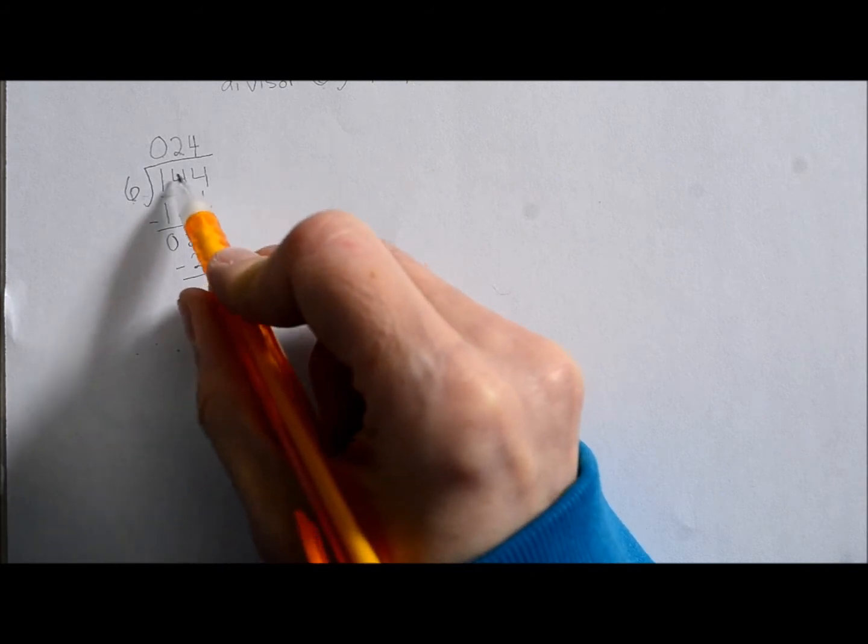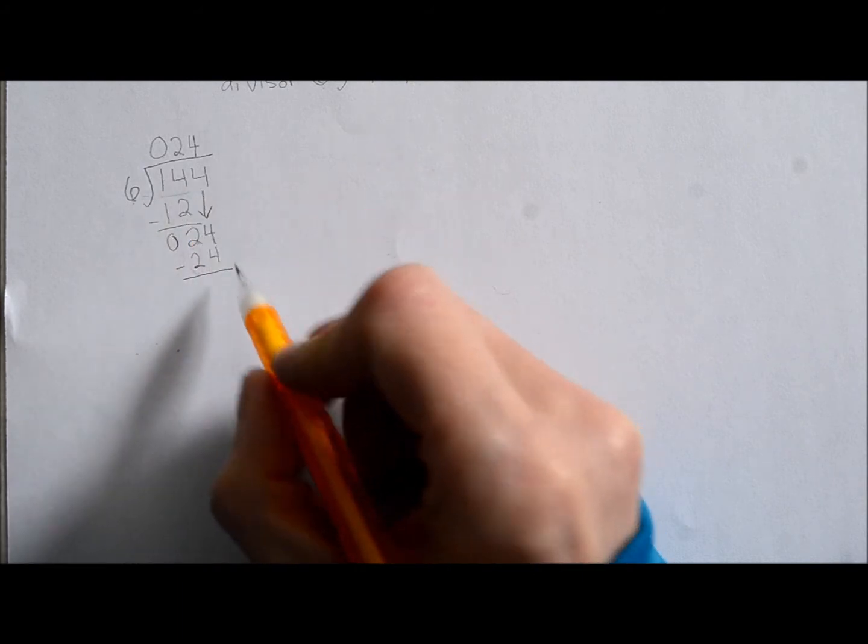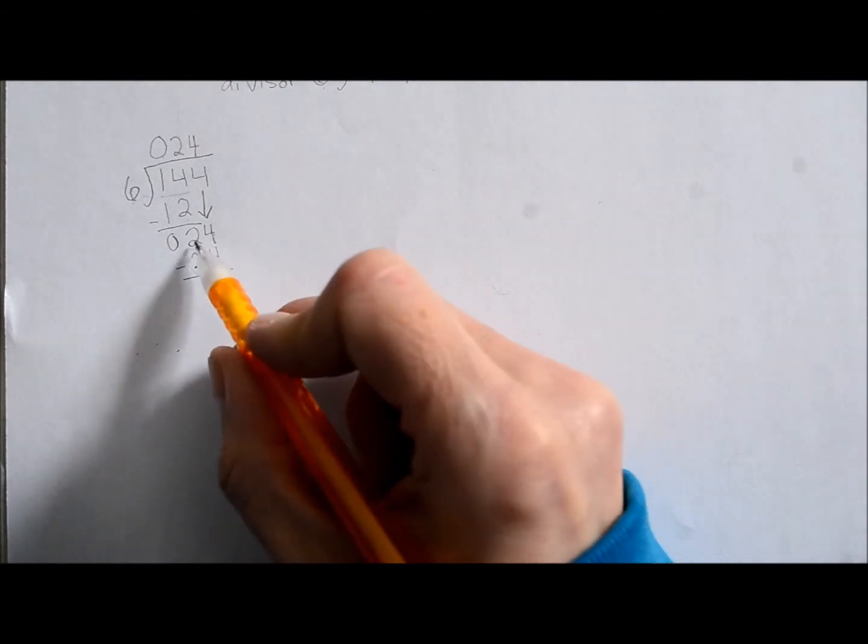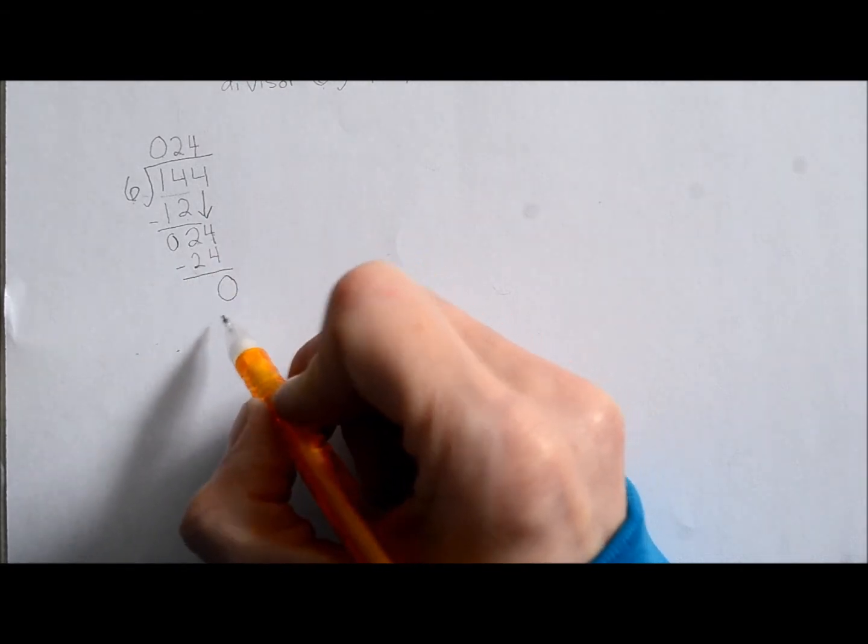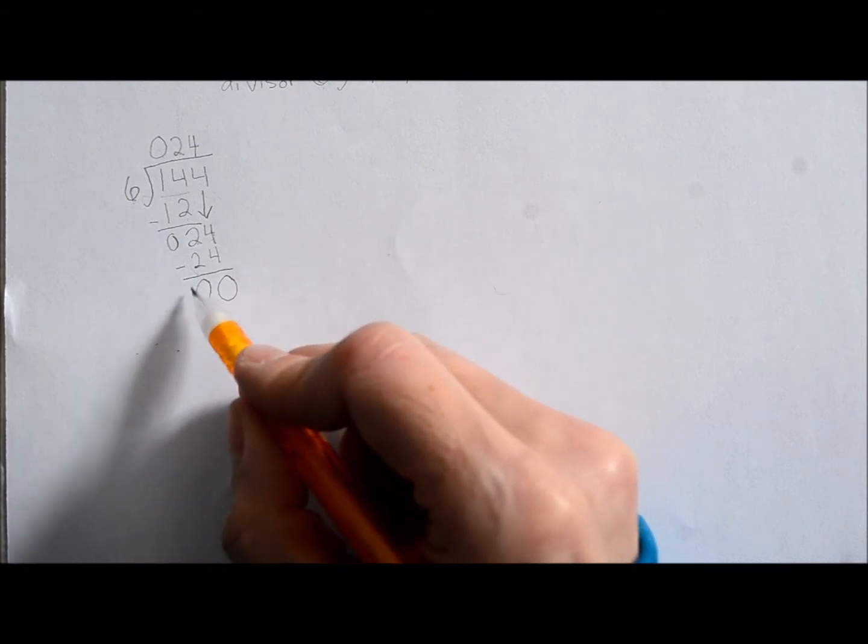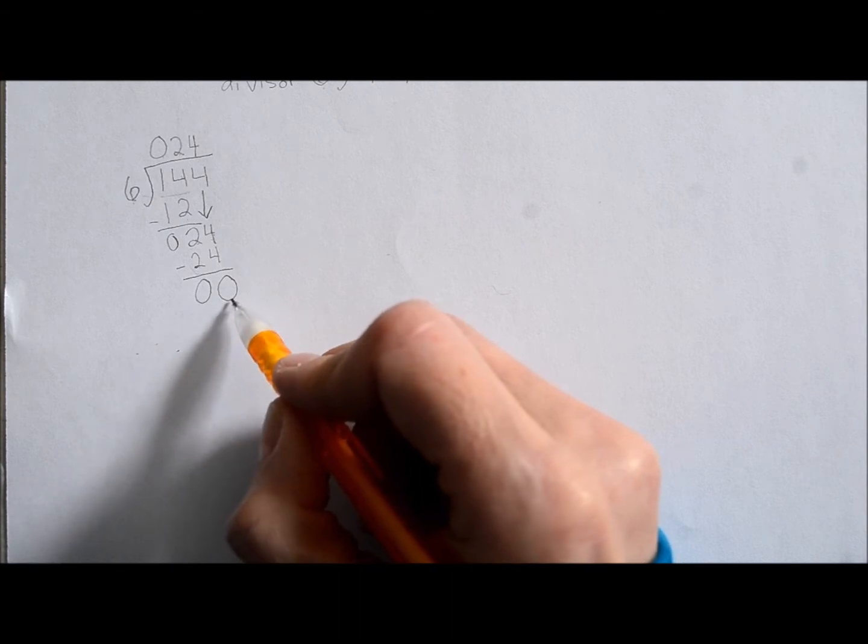And again, just like we did here, we're going to subtract it. So what's four take away four? Right. What's two take away two? Correct. Now if there's zeros here, then that means there's no remainder.